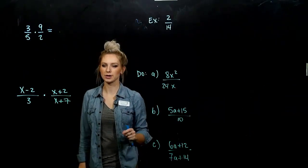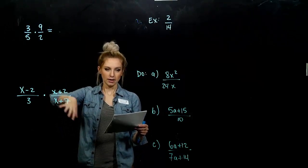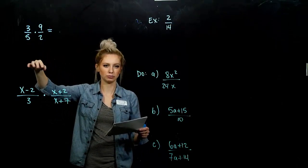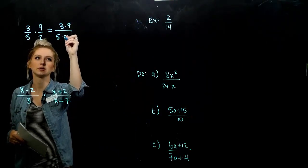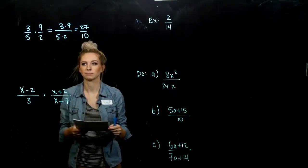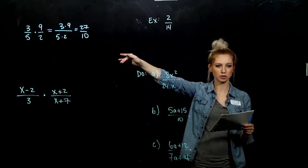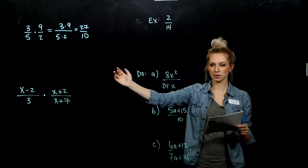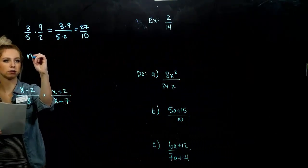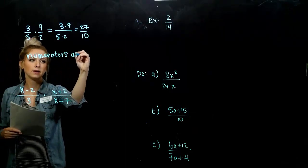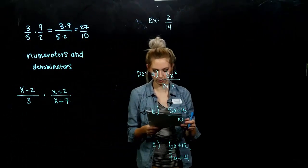We want to look at combining these with different operations, and the first one is multiplication. When multiplying rational expressions with variables, it works the same way as multiplying rational numbers. We go straight across the top — 3 times 9 — and straight across the bottom — 5 times 2 — and we get 27 tenths. We always want to ask if we can simplify. To multiply rational expressions, we multiply the numerators and multiply the denominators together, and in the end we want to make sure we simplify as far as we can go.